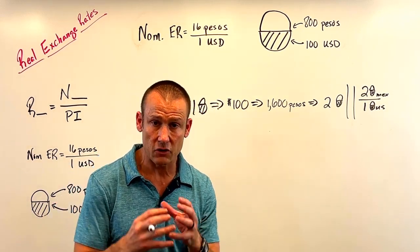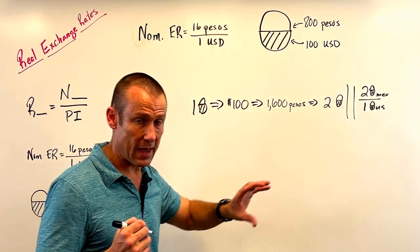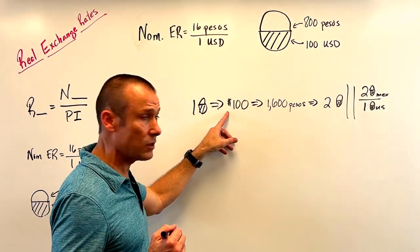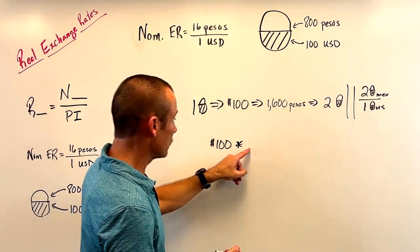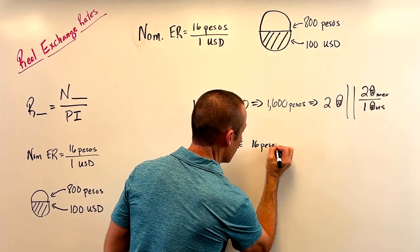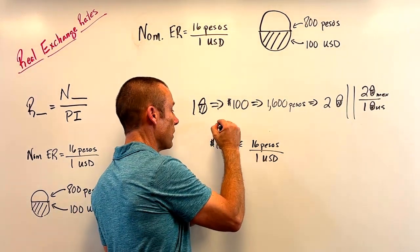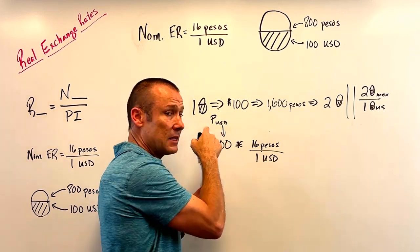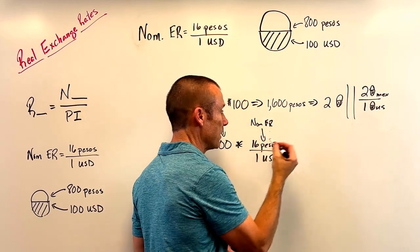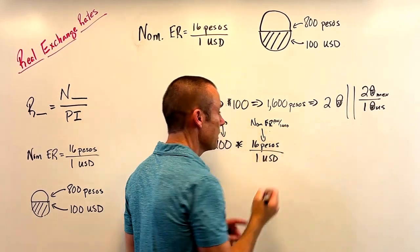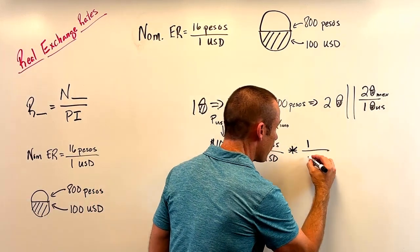To find the real exchange rate you need the nominal exchange rate and a market basket priced in both the foreign currency and the domestic currency. Now let's boil it into a formula. What we did is we took that market basket, sold it in the United States for $100, then multiplied that $100 by the nominal exchange rate — 16 pesos over 1 USD. That P_usd is the price of the market basket in USD, and this is the nominal exchange rate.